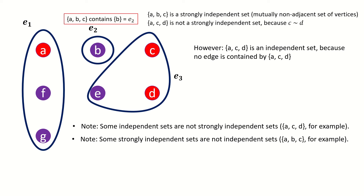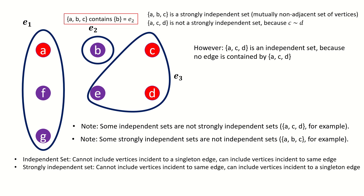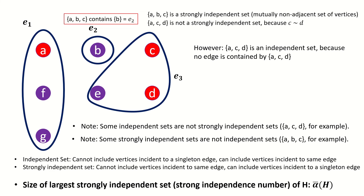That demonstrates that some strongly independent sets are not independent sets. Basically, independent sets cannot include vertices incident to a singleton edge, while strongly independent sets can. And strongly independent sets cannot include vertices incident to the same edge, while independent sets can. The size of the largest strongly independent set in a hypergraph H is called the strong independence number, denoted by alpha-bar of H.